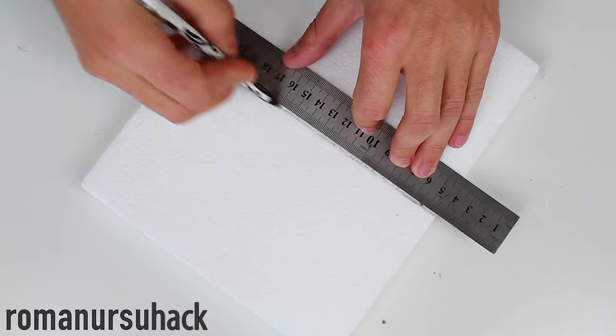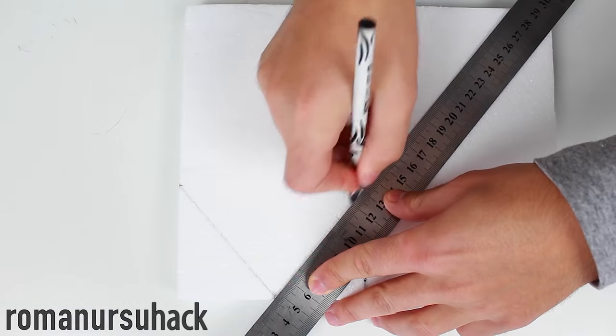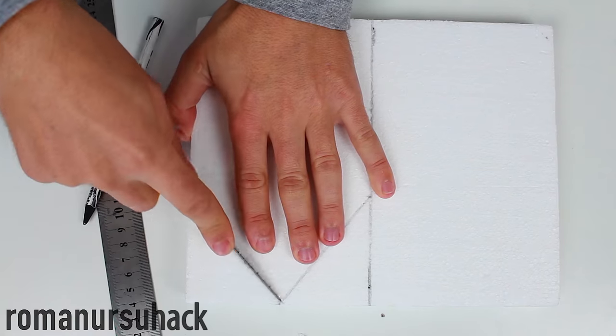So first we take a piece of foam plastic, one ruler, pencil and draw the shape of the boat the size you want, and then carefully cut it out using a stationary knife.